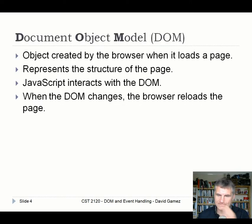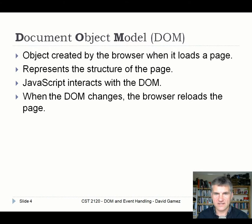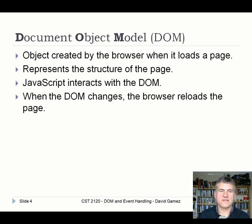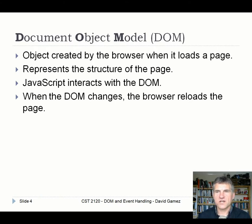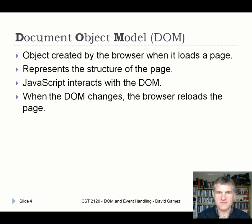So what happens when the browser loads a page — a page consisting of the HTML, the CSS and the JavaScript — is it creates its own representation of that HTML. It's a tree structure showing all the different elements that correspond to the HTML tags. Then when JavaScript wants to change this page, it interacts with the Document Object Model. And when the DOM changes, the browser reloads the page.